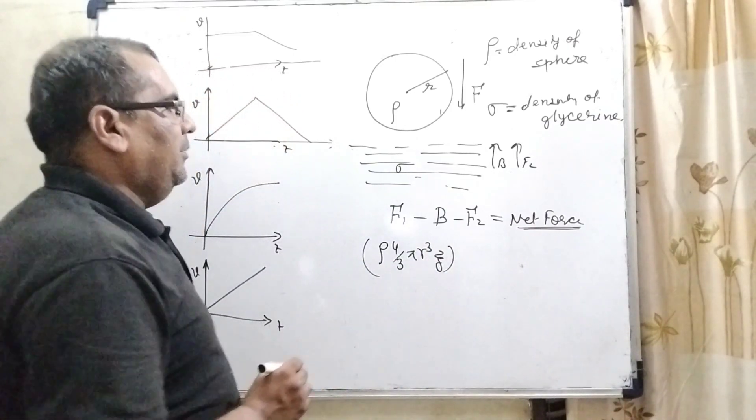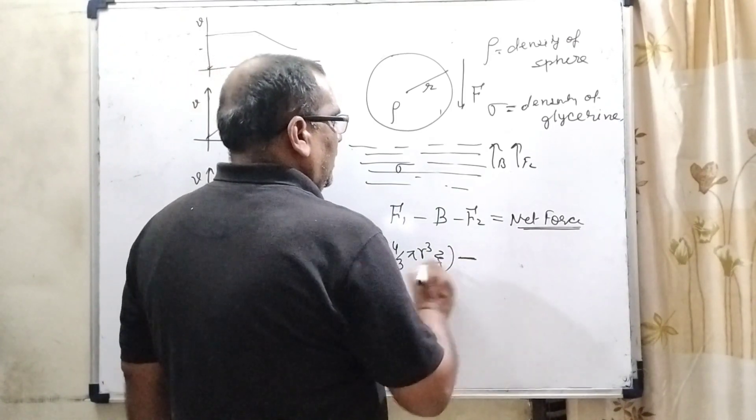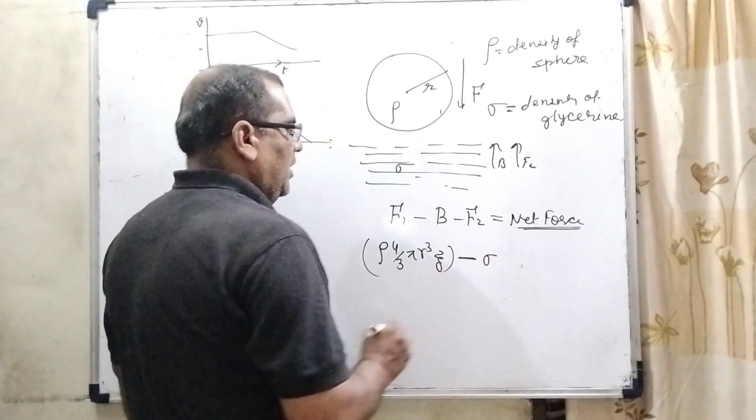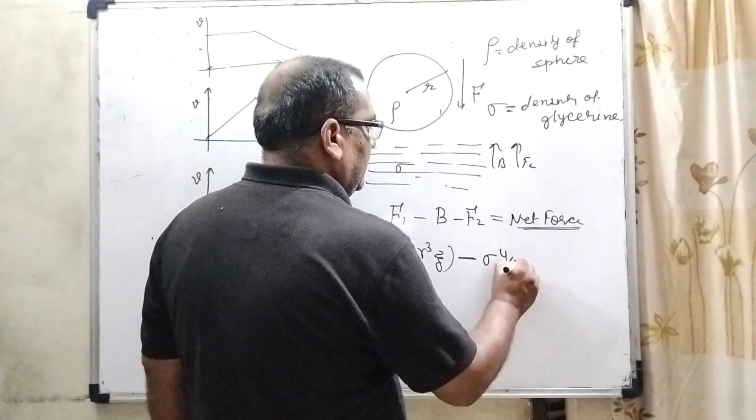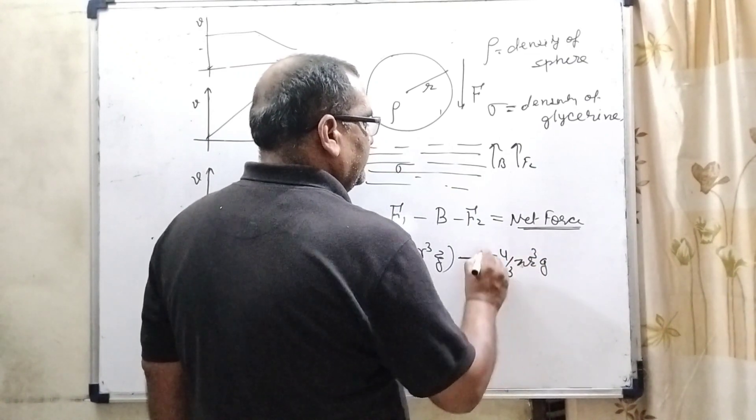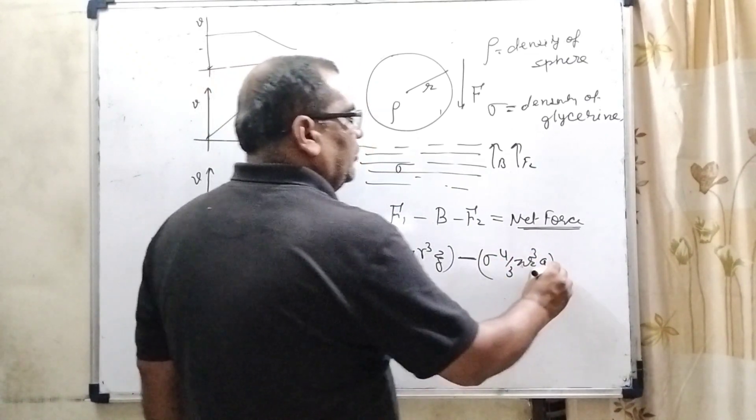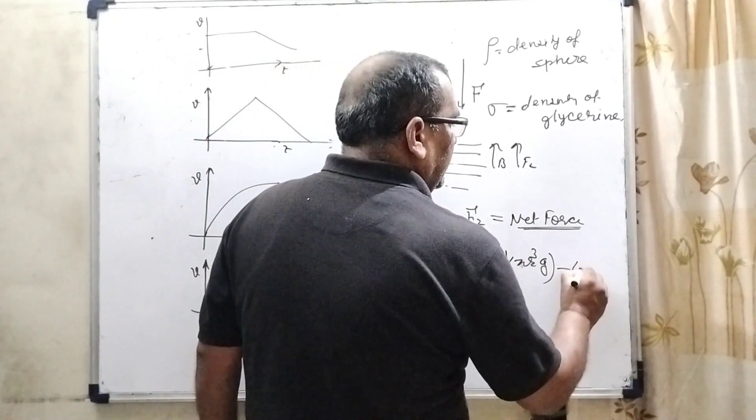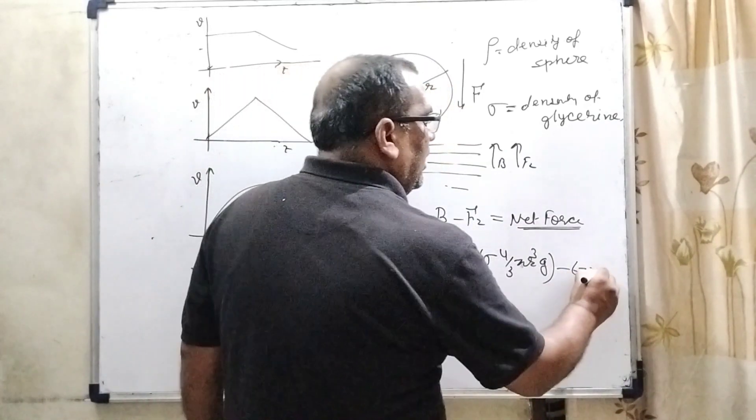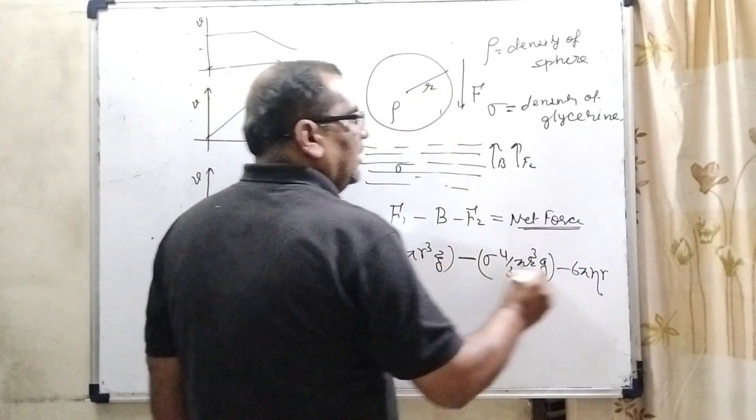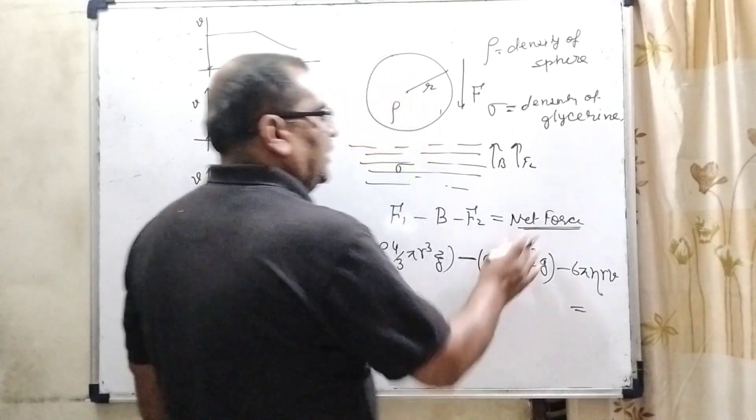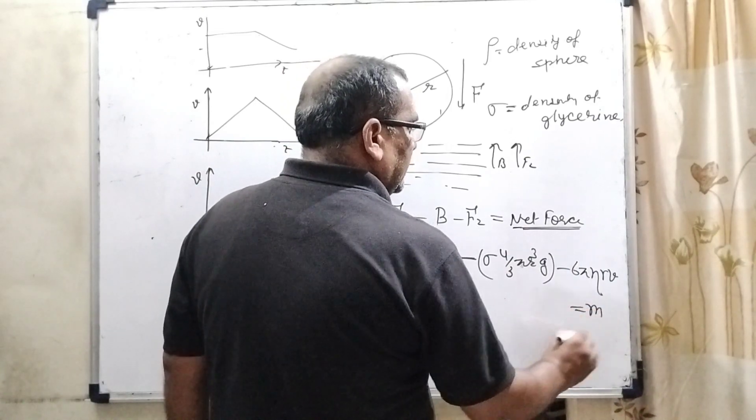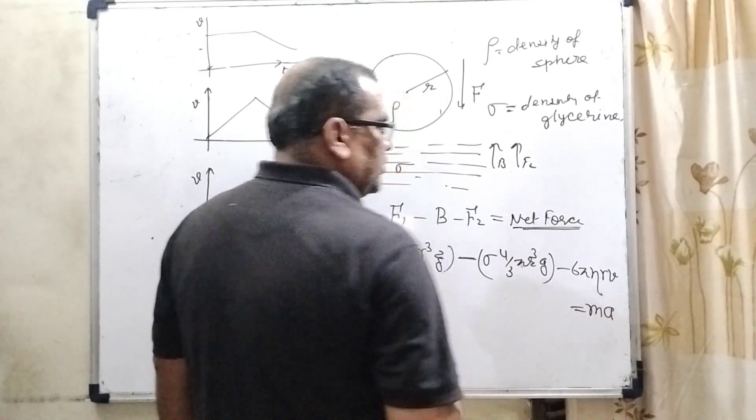And B upthrust force that is density is sigma again 4 by 3 pi R cube and G. And F2 that is already by Stokes law 6 pi eta viscosity coefficient R radius of the sphere and V. V is equal to net force. Net force, it can be written as mass into acceleration. So, this is acceleration.